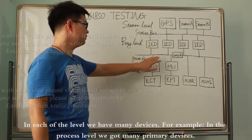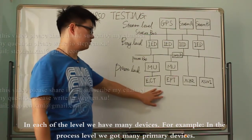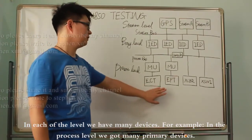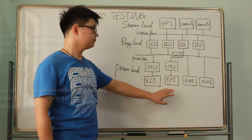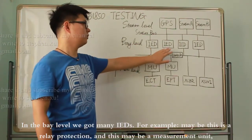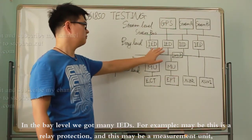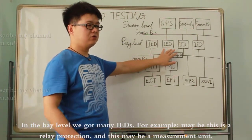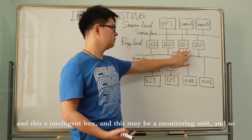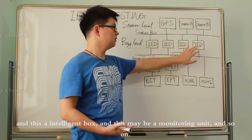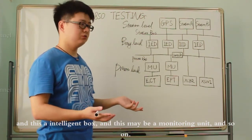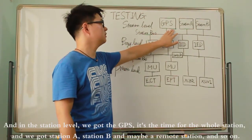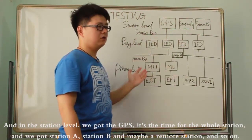In each of the levels, we have many devices. For example, in the process level, we have many primary devices. In the bay level, we have many IEDs — maybe relay protection, a measurement unit, an intelligent box, a monitoring unit, and so on. In this level, we also have the GPS for time synchronization for the whole station.